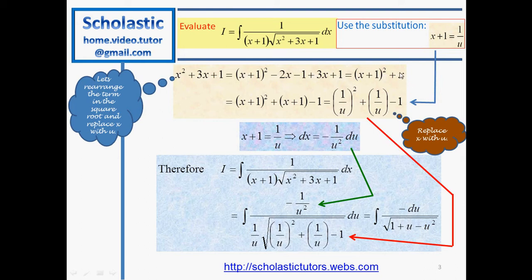We still need to replace x plus 1 with 1 over u, so we need an (x+1) term. We rewrite as (x+1) squared plus (x+1) minus 1, adding plus 1 and taking away minus 1 to keep it balanced. Now (x+1) squared equals 1 over u squared, and (x+1) equals 1 over u, giving us 1 over u squared plus 1 over u minus 1 inside the square root.